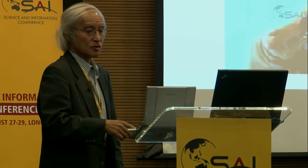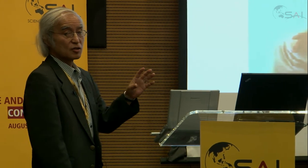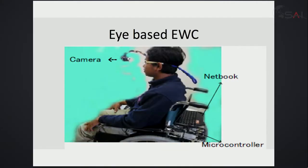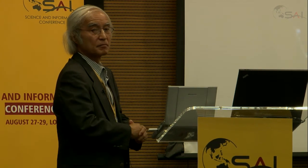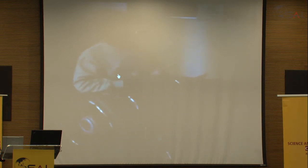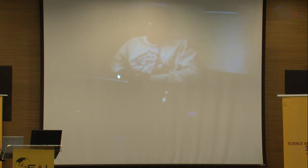That is how ALS patients can communicate with others. Another application is electric wheelchair control by human eyes only. A camera and netbook are mounted on the back of the electric wheelchair. The user cannot use their hands or fingers — just sitting in the wheelchair — and can control its direction by eye.